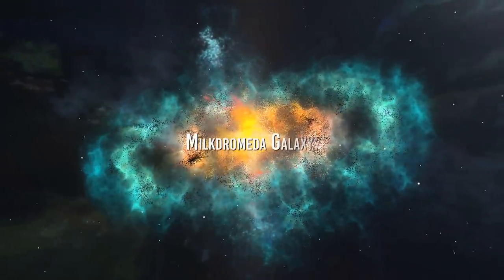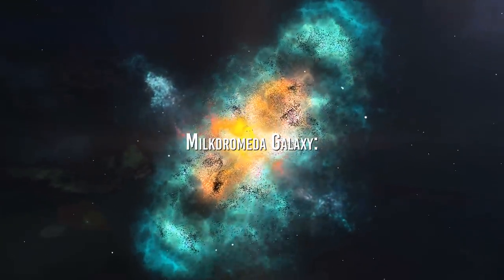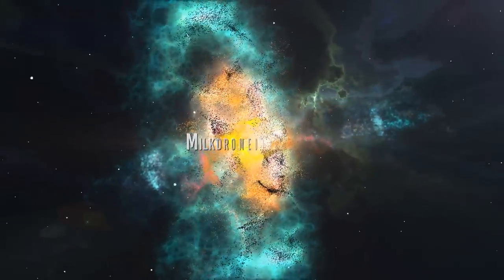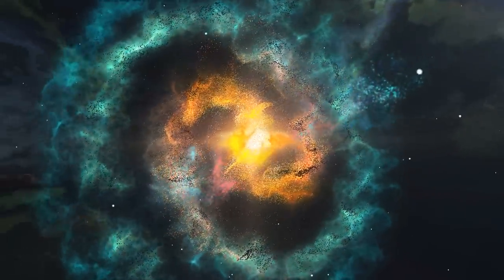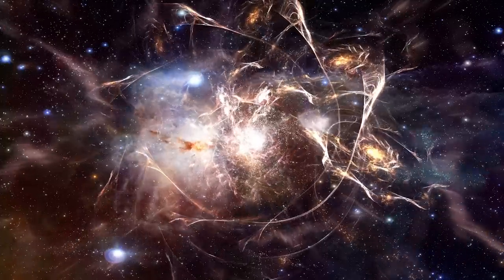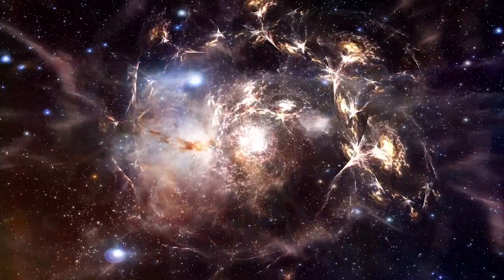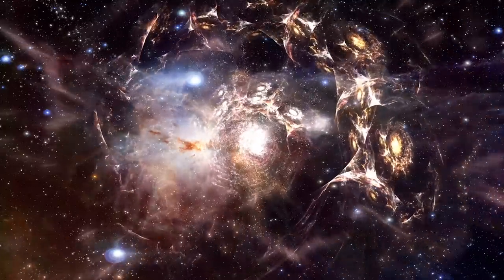In about 4.5 billion years, the Andromeda Galaxy and Milky Way will begin to merge. This process will take a few billion years to complete. During this time, the two galaxies will move through space, gravitationally interacting with each other, and producing a wave-like effect in the arms of each galaxy.